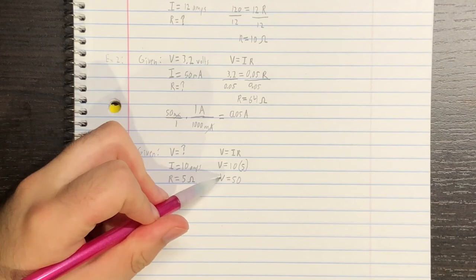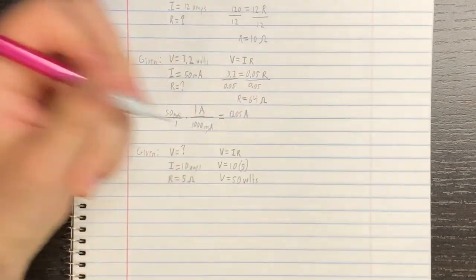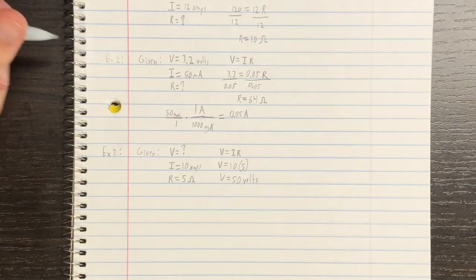So, we find that voltage is equal to 50 volts. And we're done. That's the voltage across the resistor.